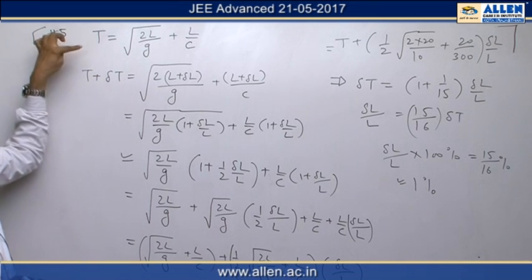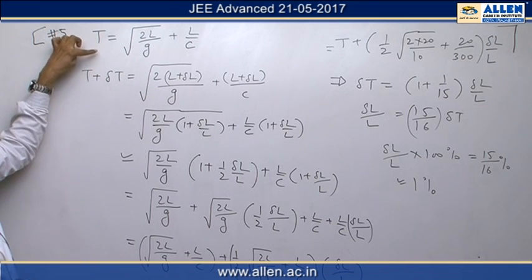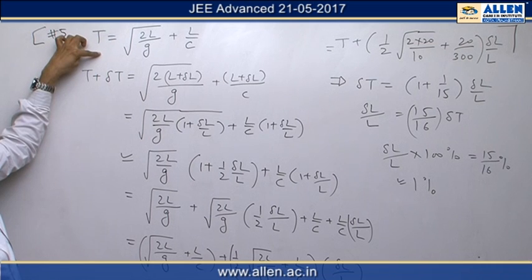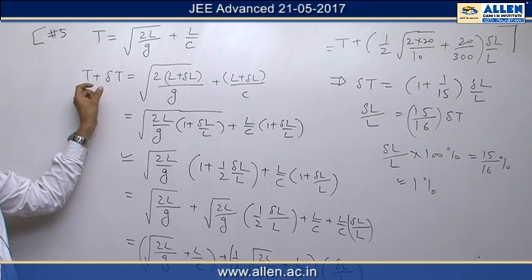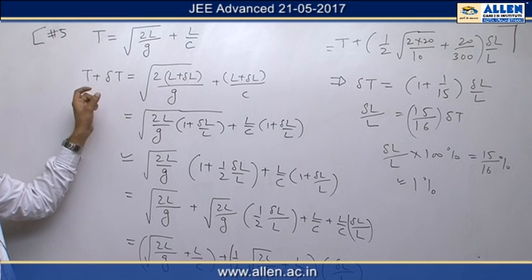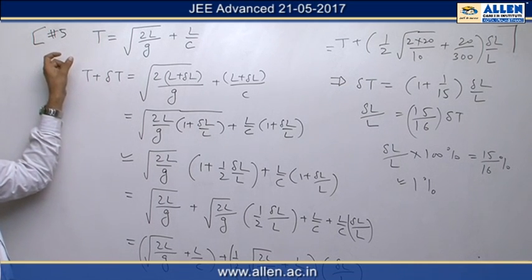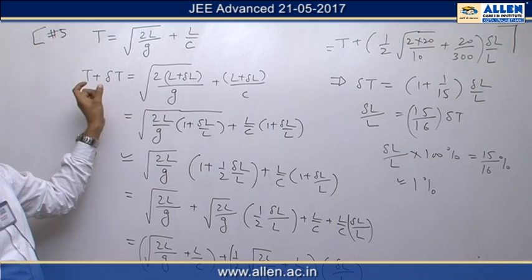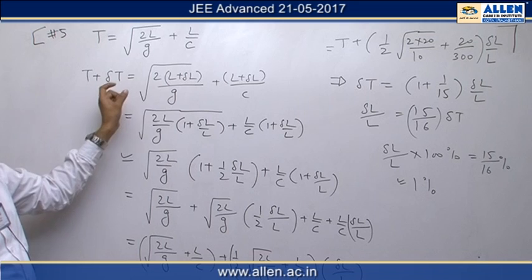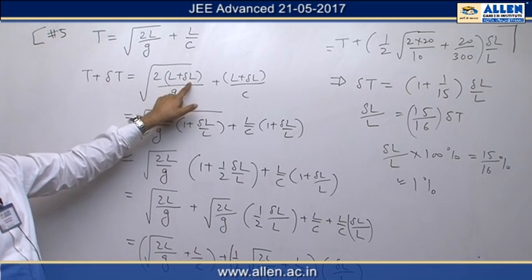We have to find out error in this function of t, so for a small change of delta l, change in t is delta t, so t plus delta t equals when l is l plus delta l.